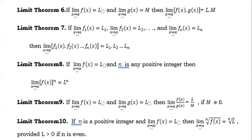Theorem six: if the limit of f(x) as x approaches a equals L, and the limit of g(x) as x approaches a equals M, this is the product rule. The limit of f(x) times g(x) as x approaches a is equal to L times M — you simply multiply the limits.